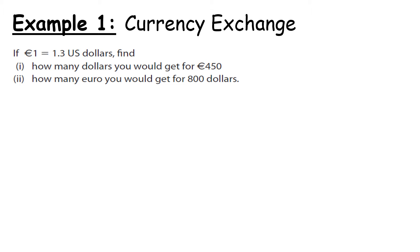Example one: if one euro is equal to 1.30 US dollars, find out how many dollars you will get for 450 euro and how many euro you will get for 800 dollars. My number one trick for this is to draw out a little guide. If we go from one to the number, we multiply; if we go from the non-one number back, we divide. It's easy to remember — multiplying or dividing by one changes nothing, so it's always the other number, the one that's not one.